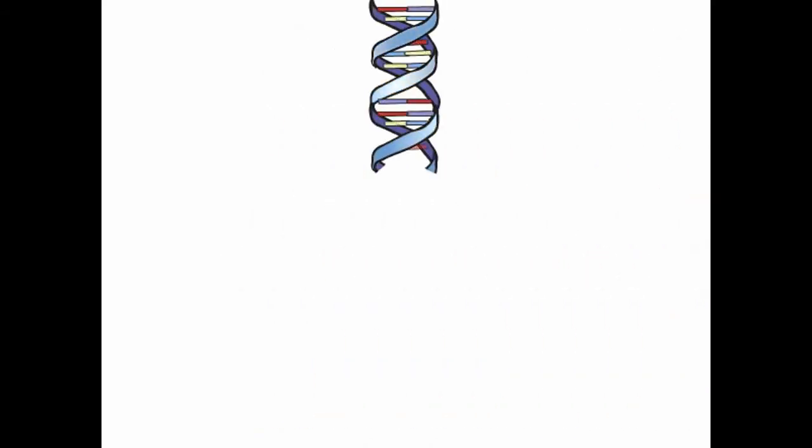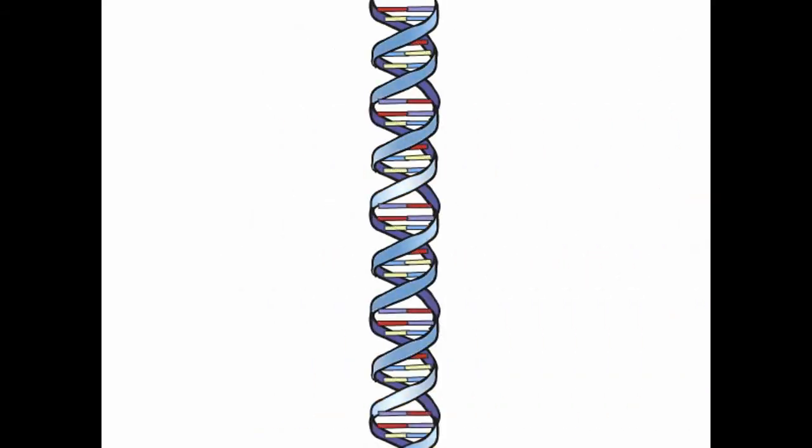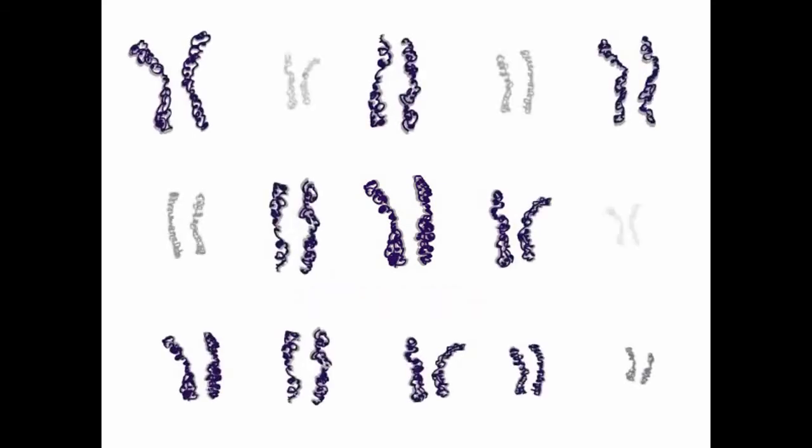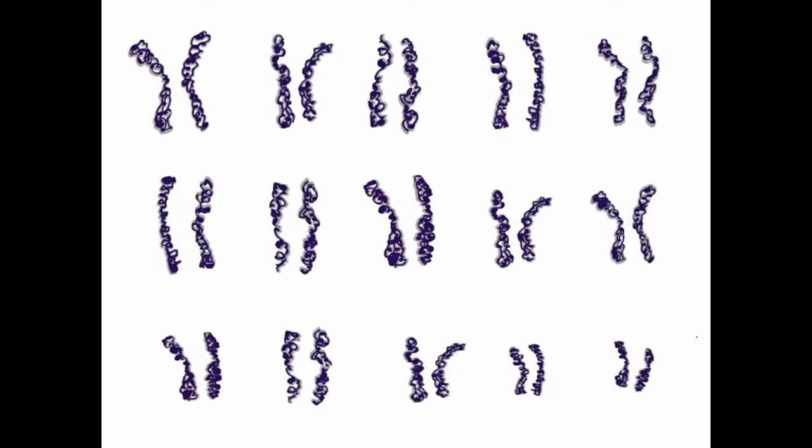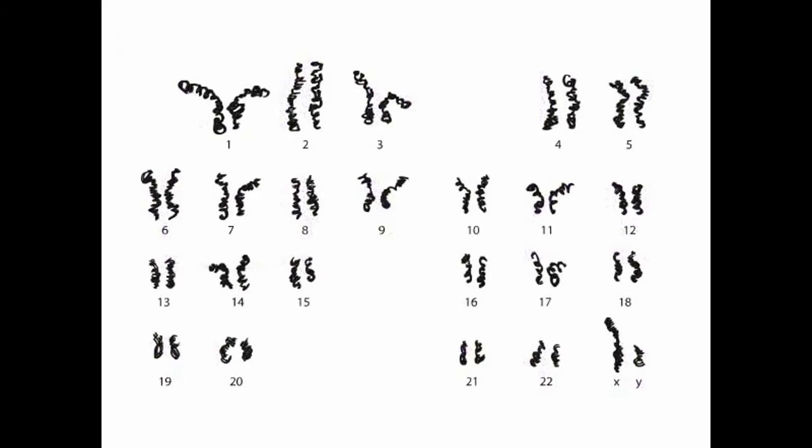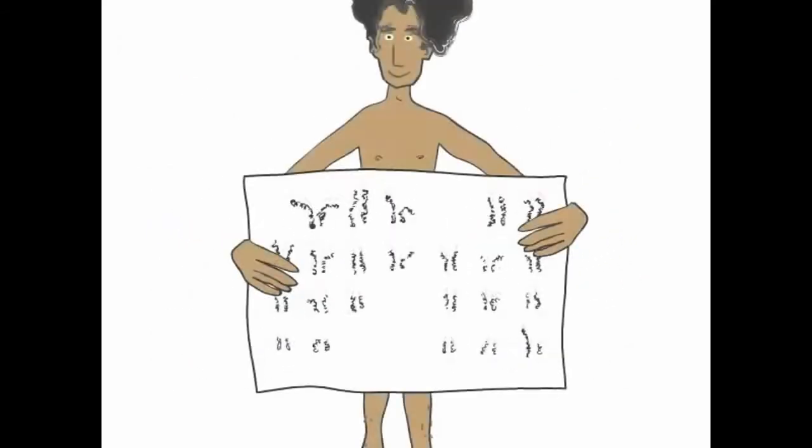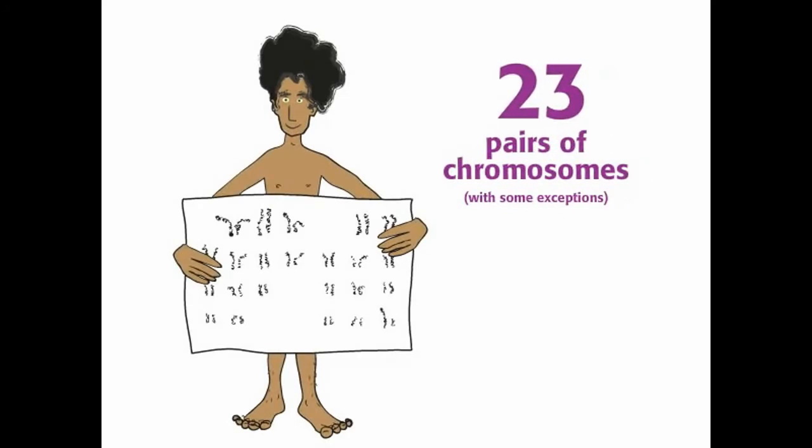The long molecules of DNA containing your genes are organized into pieces called chromosomes. Different species have different numbers of chromosomes. Humans usually have 46 chromosomes, two sets of 23, or simply 23 pairs of chromosomes.